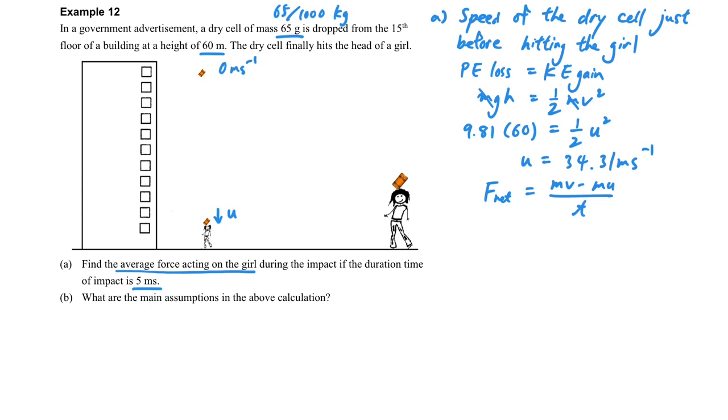We can use F net equals mv minus mu over t. Suppose after it hits the girl, it stopped. Then we can substitute the v as 0 and u with the speed that we just found.